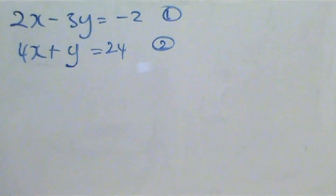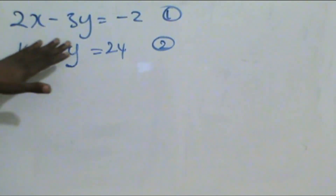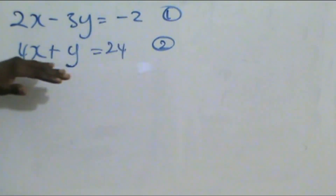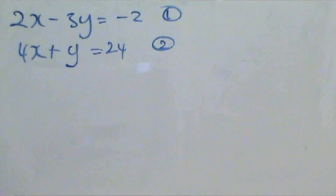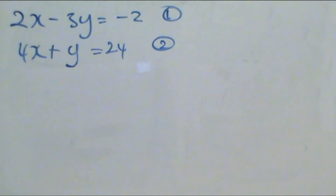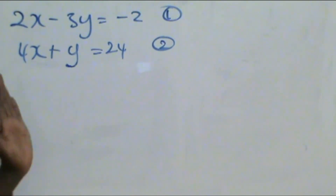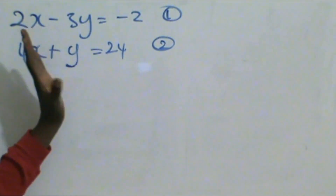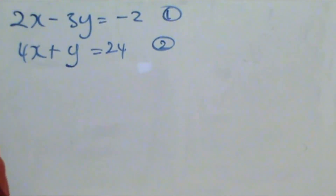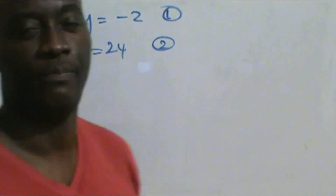Look at the equations. The first equation is 2x minus 3y equals minus 2, and the second equation is 4x plus y equals 24. The first thing we want to do is to express these two equations in what we refer to as the matrix form.